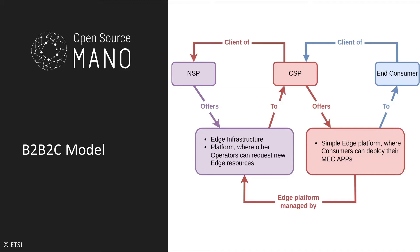What this means in the scope of MEC, or multi-access edge computing, is that we have a first type of operator, the NSP, or network service provider, whose clients are other telco operators, which are the CSP, or communication service providers. And the clients of the CSP are the end-consumers. The NSP, in this case, offers to the CSP the edge infrastructure and also a platform where the CSP operators can request for edge resources. The NSP also provides the CSP with a platform that the CSP can then provide its end-consumers to deploy their MEC applications in the edge infrastructure.